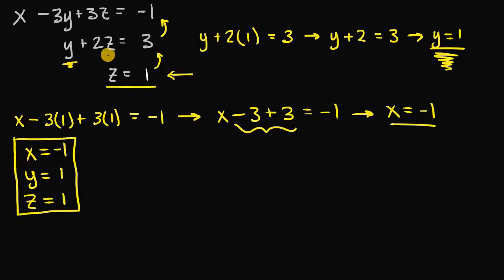This is the solution set to this system of linear equations. Back substitution is simply a process of working backwards to solve a system of linear equations. Now, I mentioned that this system of linear equations is written in a very special form called row echelon form. In order for a system of linear equations to be in row echelon form, it should follow four rules.